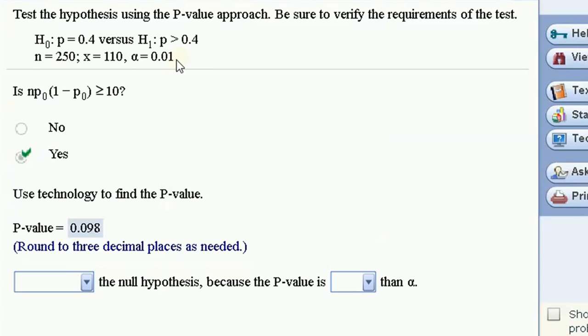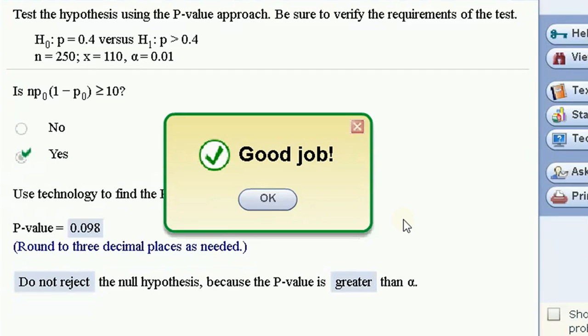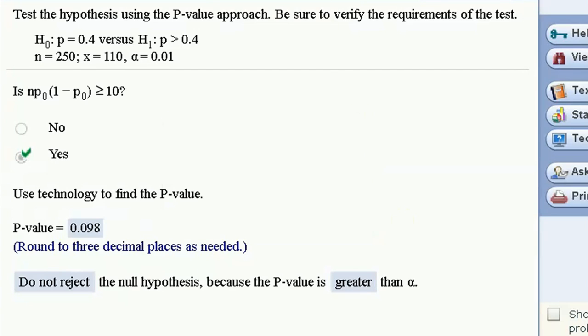Now, is that p-value less than my alpha level? Nope, it is not. We fail to reject. We do not reject the null hypothesis because the p-value is greater than alpha. That's how we make our conclusion for using the p-value approach.